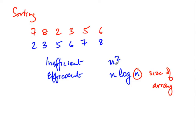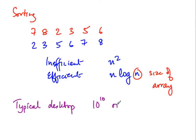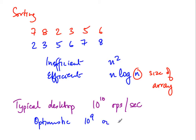Can we really see the difference between n squared and n log n? We can work out numerical values. A typical desktop CPU can do something like 10 to the 10 operations per second — we are discussing the basic steps an algorithm can take. If n squared equals 10 to the 10 it gets done in one second; similarly if n log n equals 10 to the 10 it gets done in one second. This is optimistic; 10 to the 9 or 10 to the 8 may be more realistic, but 10 to the 10 is fine for calculation purposes.